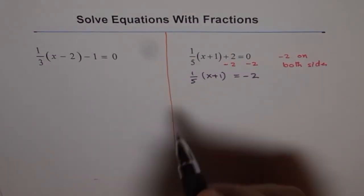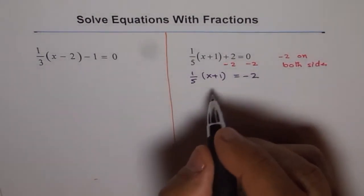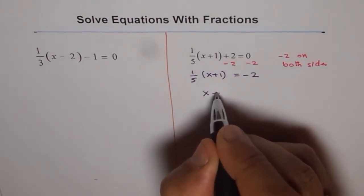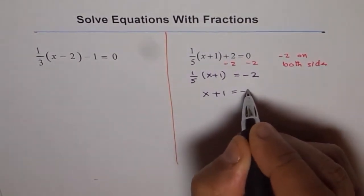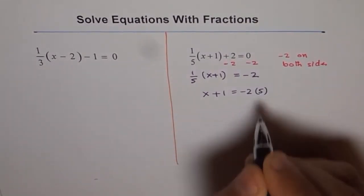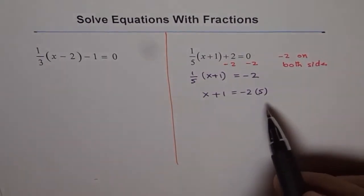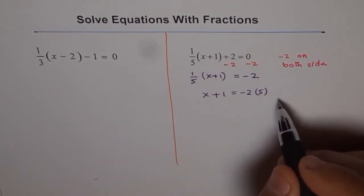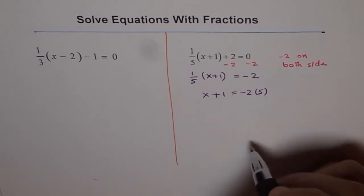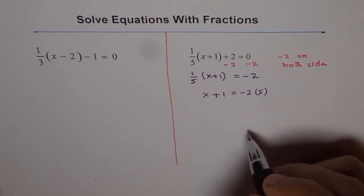Now next step, as I said, we will multiply by 5. And if I do that, I get x plus 1 equals to minus 2 times 5. Whenever we are doing times, we don't really have to draw or write cross or dot. We can just write the number in brackets. It means multiply.